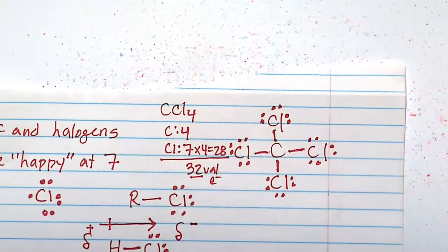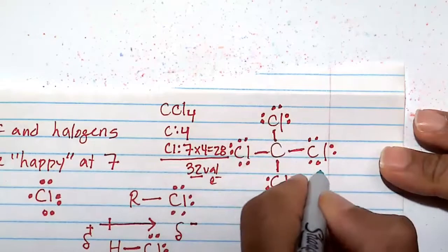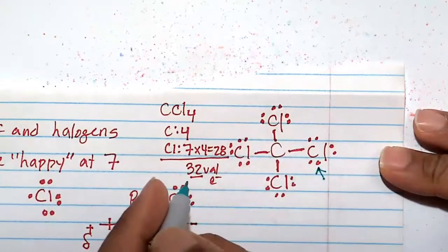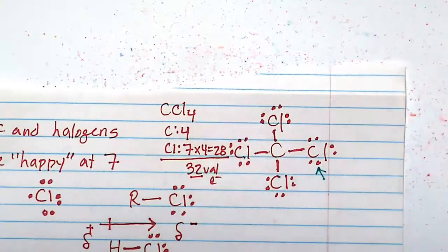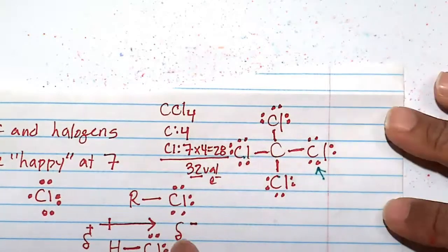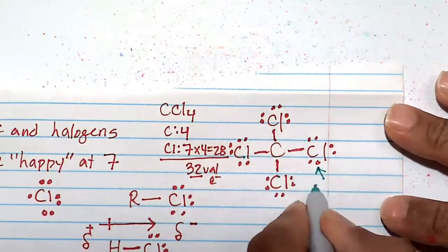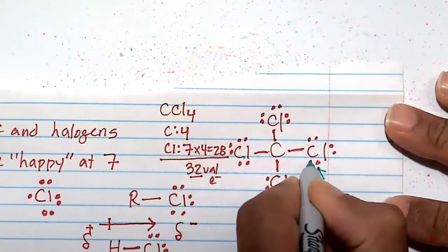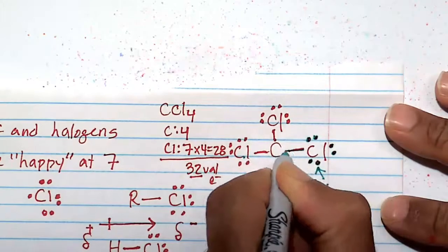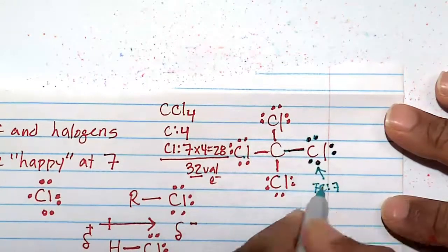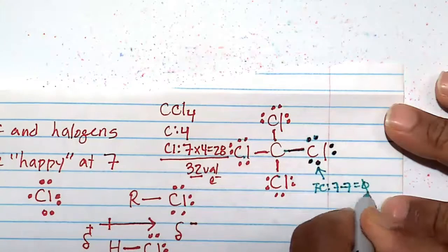We can do our formal charge and octet rule. Let's just do the formal charge for this chlorine here. All right, realizing it's the same as this chlorine, this chlorine, and this chlorine, because the molecule has symmetry. Okay, we rotate it around, move it around. It's going to be the same environment for each of these chlorines. So doing one is the same as doing it for all. All right, let's do the formal charge, which is most important. So formal charge, 1, 2, 3, 4, 5, 6, 7. Halogens such as chlorine happy at 7, 7 minus 7 is 0.